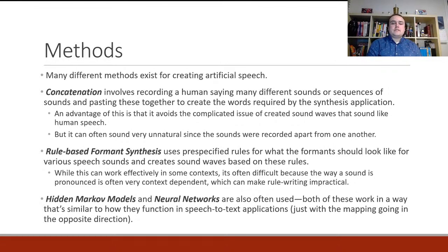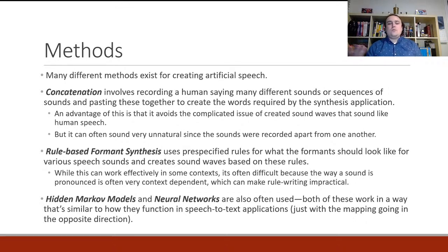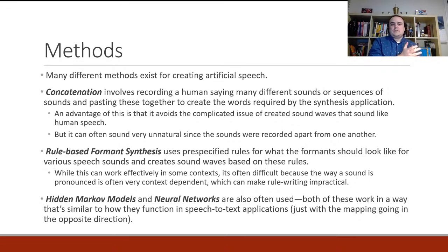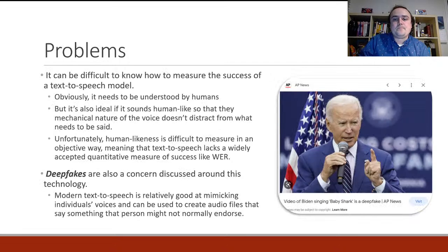The last two methods — hidden Markov models and neural networks — are also really popular, with neural networks being the most recent and best approach. Both work in a way that's really similar to how they function in speech-to-text applications. No need to go into a lot of detail again — hidden Markov models are covered in the next computational linguistics class, and neural networks we'll talk about more later in this class.